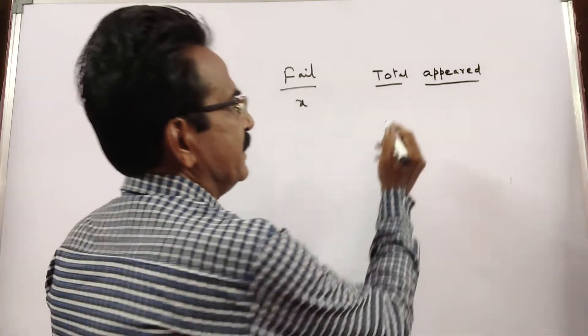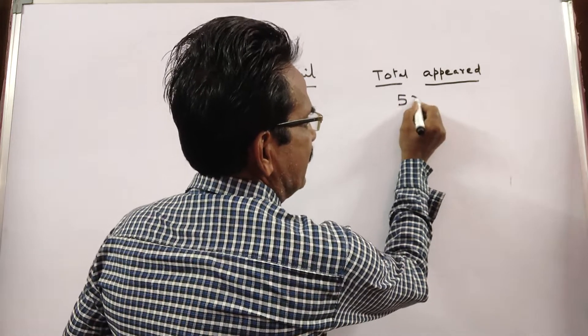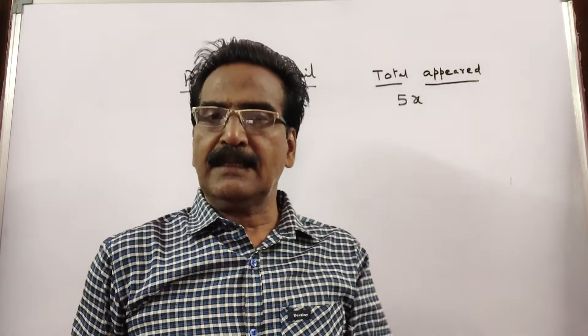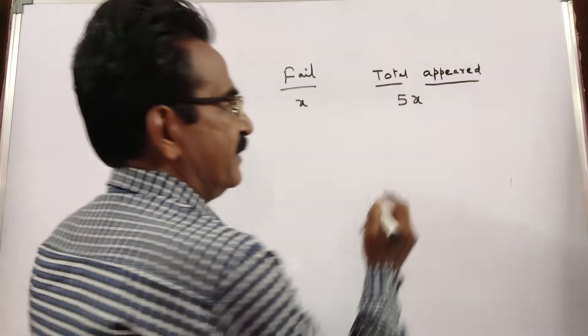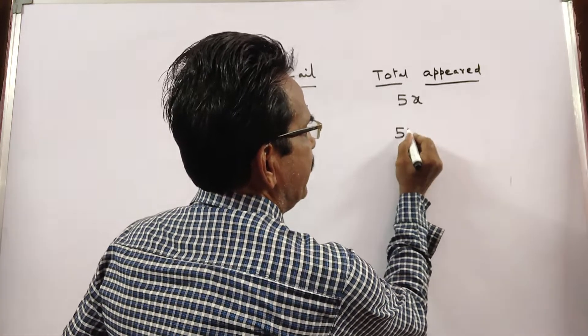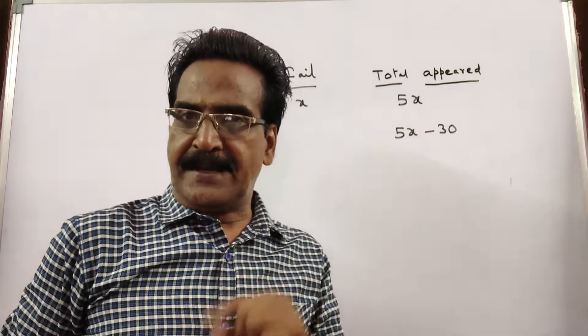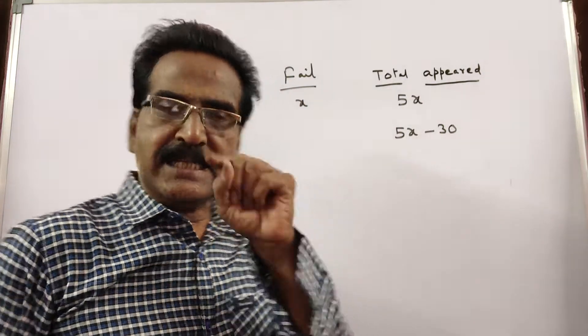That means total number appeared is 5x. Now what is the second statement? Had 30 less appeared, that is number appeared 5x minus 30, and 20 less passed.